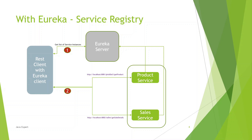Now let's see how the same thing works with Eureka service. With Eureka you have two parts: the Eureka server and the Eureka client. The Eureka server runs independently. Whatever services we deploy, they will automatically register with the Eureka server — the product service registers, and the sales service registers as well. On the REST client side, we install the Eureka client API.